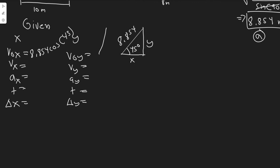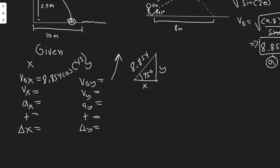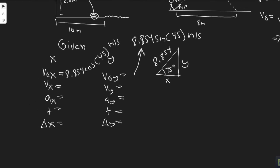The only thing that really changes here is the trig function we use. Both of these are meters per second. We don't know the final velocity, so let's just ignore that.